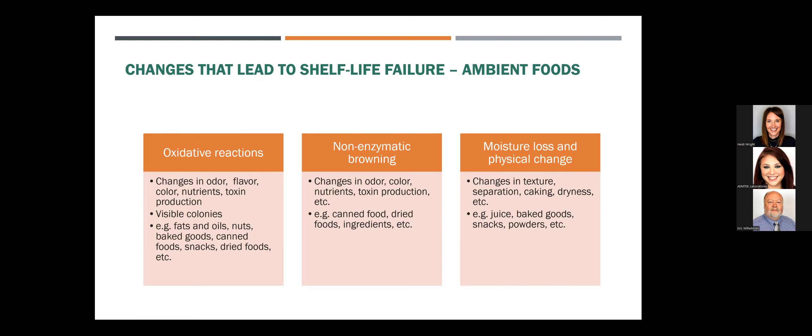For ambient foods, you'll see very similar modes of failure across storage conditions — there could be multiple modes of failure. When thinking through what you need to test for, especially in preliminary shelf life studies, you want to encompass those potential modes of failure to figure out what the limitation will be. For ambient foods: oxidative reactions, non-enzymatic browning, moisture loss, and physical changes — you could be testing for microbial changes, chemistry, as well as sensory.